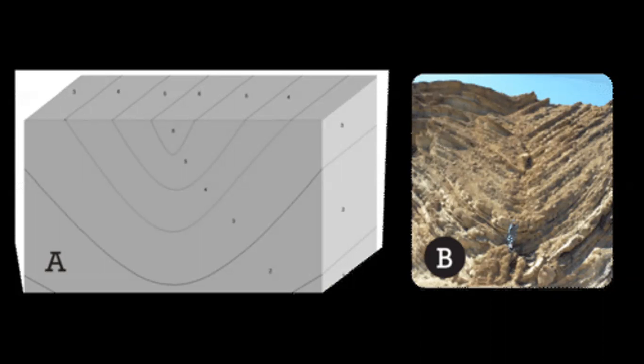A syncline is a concave downward fold. This syncline is seen at Calico Ghost Town near Barstow, California.